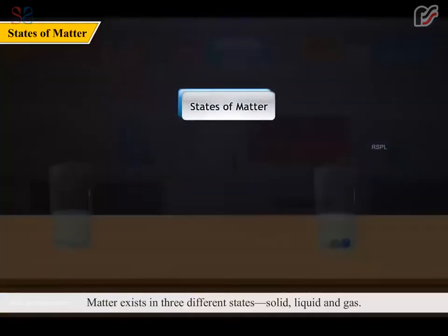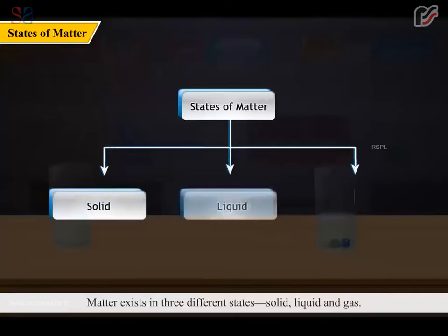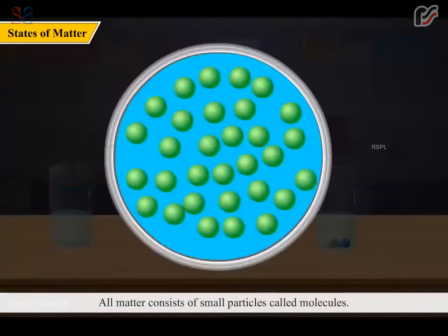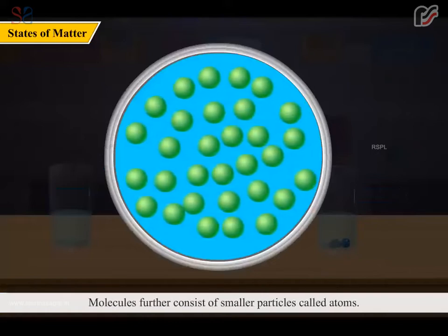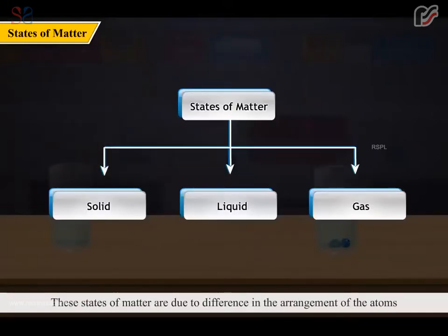Matter exists in three different states: solid, liquid and gas. All matter consists of small particles called molecules. Molecules further consist of smaller particles called atoms. These states of matter are due to difference in the arrangement of the atoms or molecules of the matter.